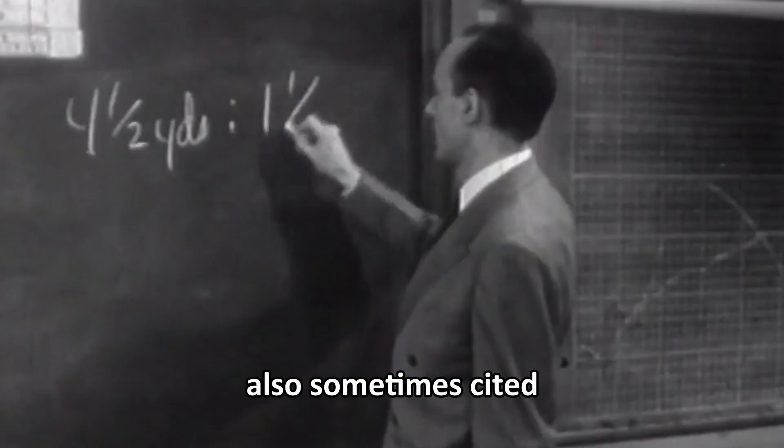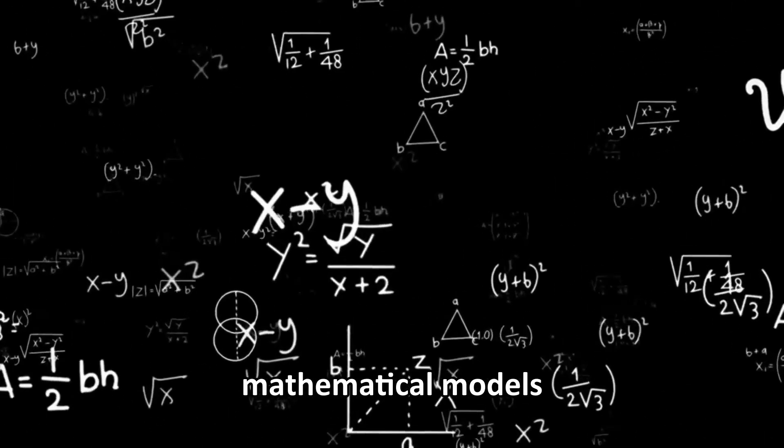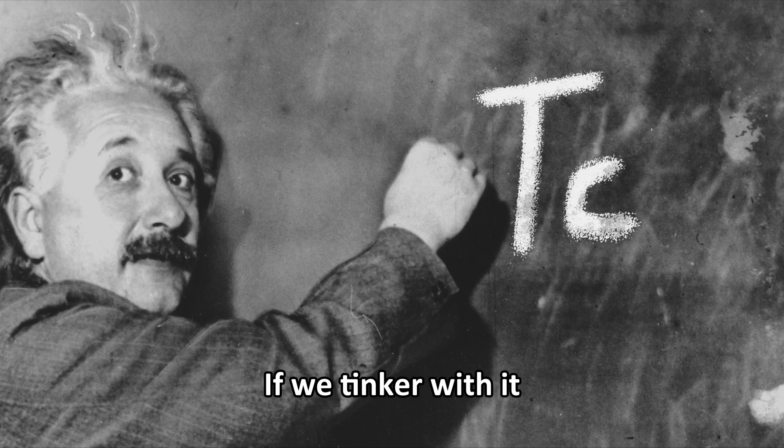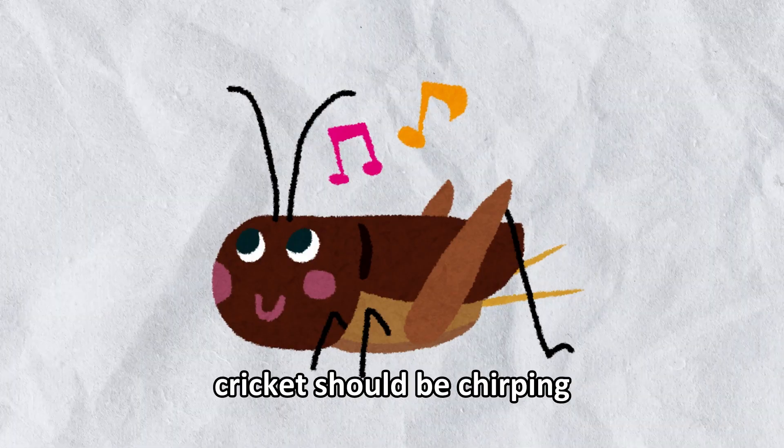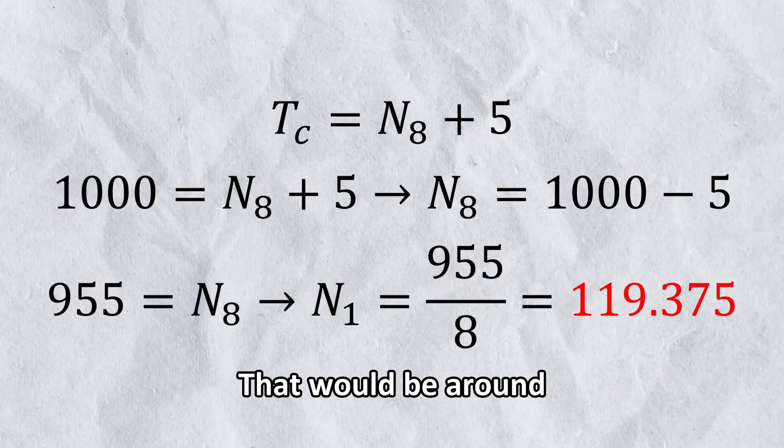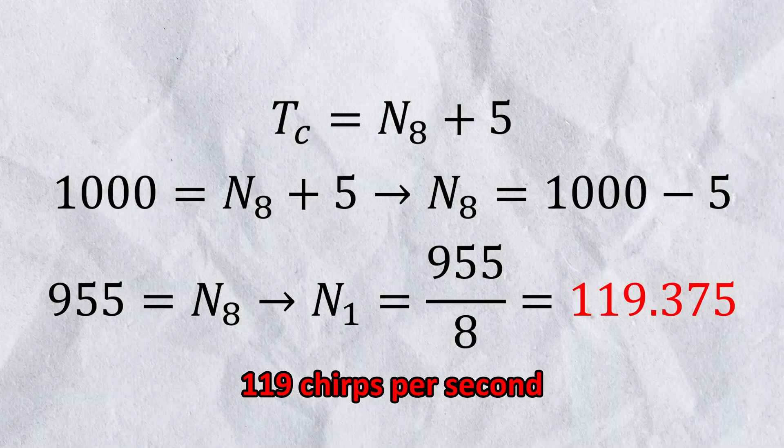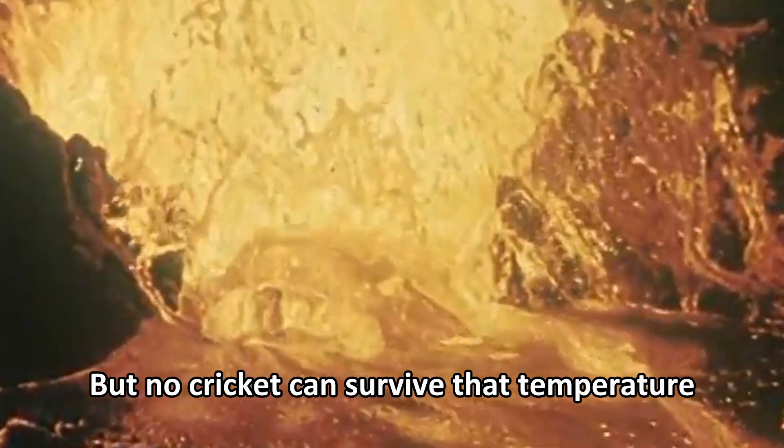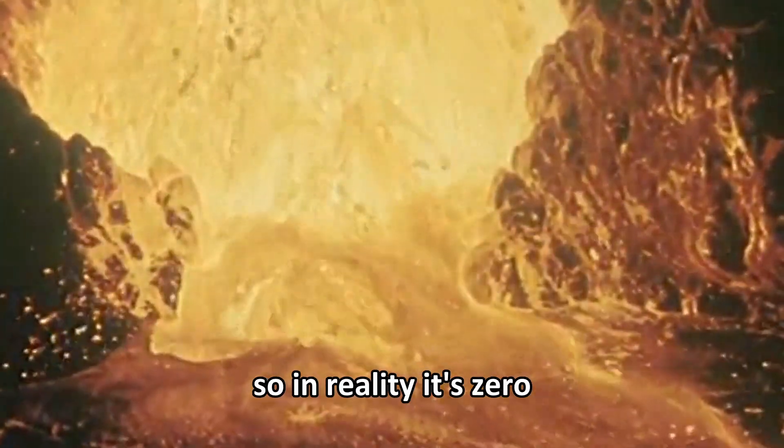Dolbear's law is also sometimes cited to show how mathematical models break in reality. If we tinker with it to see how much cricket should be chirping around 1000 degrees Celsius, that would be around 116 chirps per second. But no cricket can survive that temperature, so in reality it's zero.